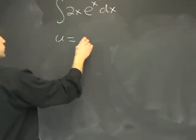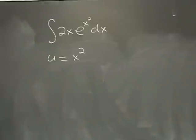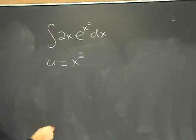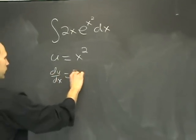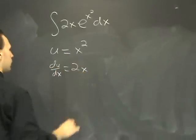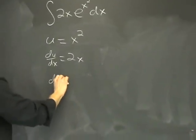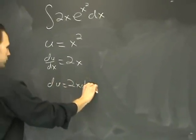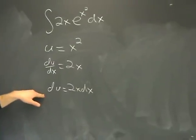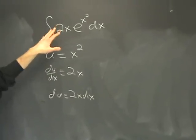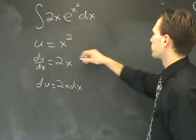For this particular problem, u equals x squared will do just fine. Once you pick what u is, you have to differentiate it: du/dx equals 2x. Then I recommend bringing this over to the other side: du equals 2x dx. After you get that far, temporarily rewrite the integral with your substitution in it, making this replacement.